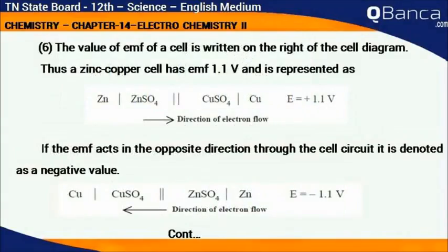The value of EMF of a cell is written on the right of the cell diagram. Thus, a zinc-copper cell has EMF of 1.1 volts and is represented as shown. If the EMF acts in the opposite direction through the cell circuit, it is denoted as a negative value, E = −1.1 V.